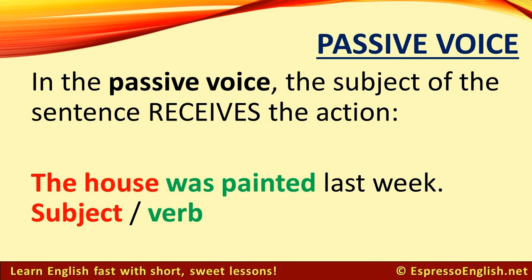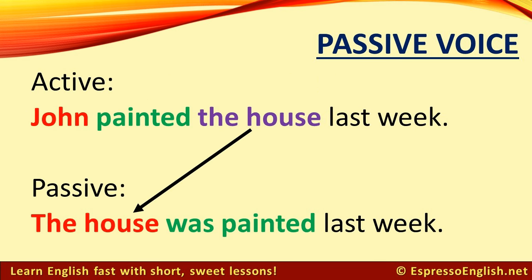In the passive voice, the subject of the sentence receives the action. For example: the house was painted last week. The house is the subject, and was painted is the verb. Notice that the object in the active sentence becomes the subject in the passive sentence.